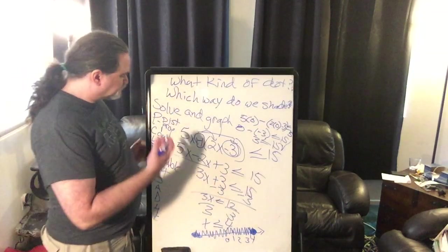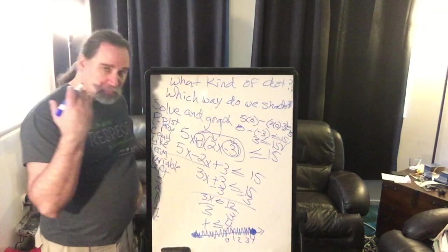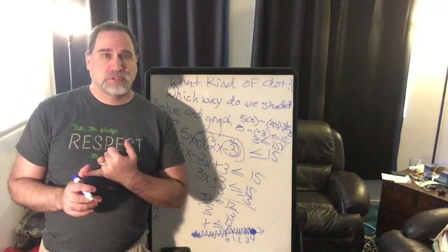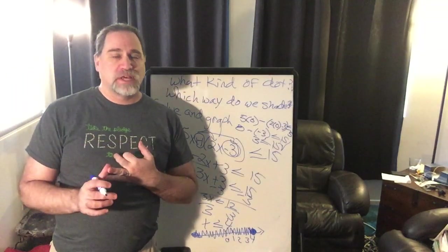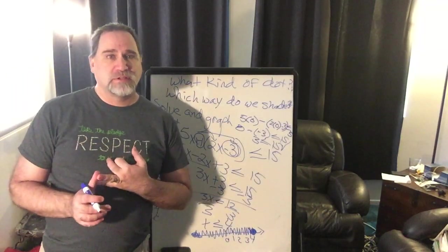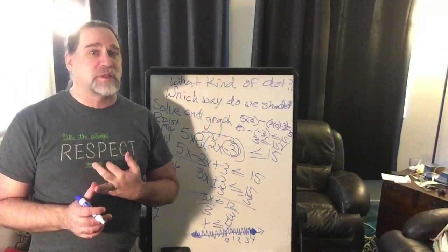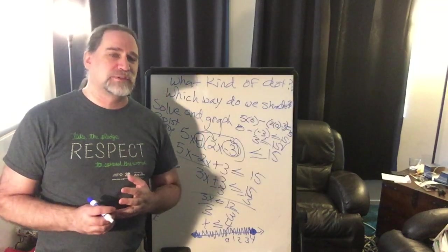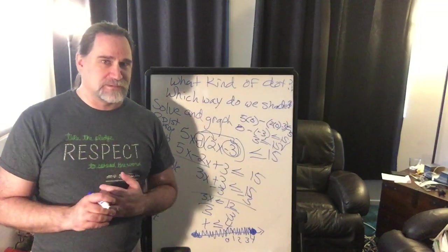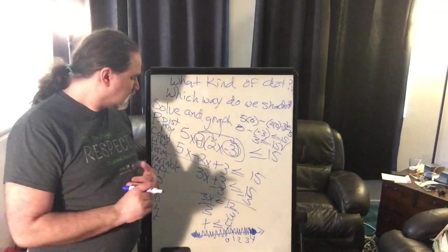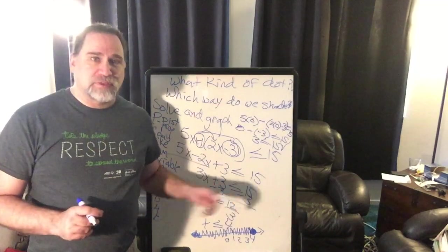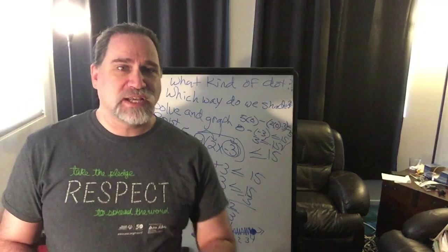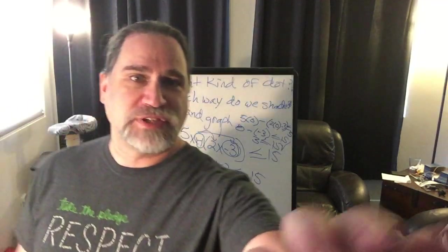So again, know what kind of dot — open or closed — and which direction to shade: less than goes left, greater than goes right. All of this applies when the variable is on the left. We'll talk about what happens when the variable is on the right in our next lesson. I will see you guys in class or in office hours.